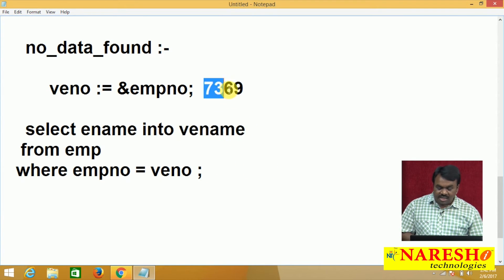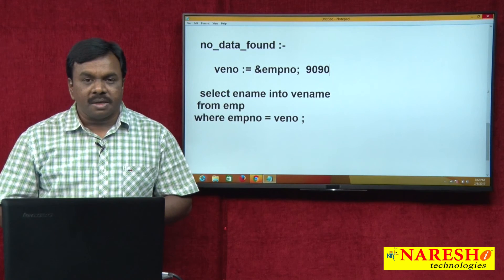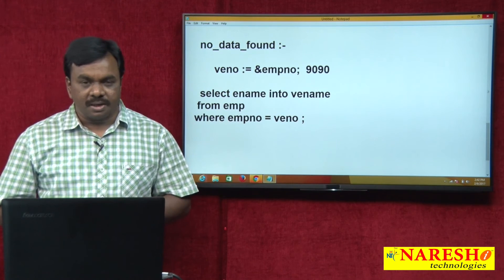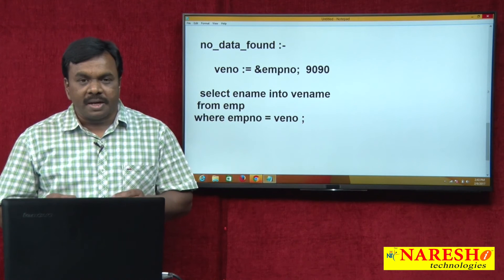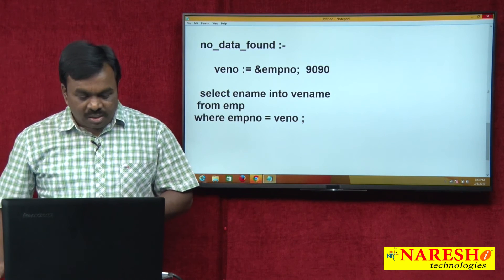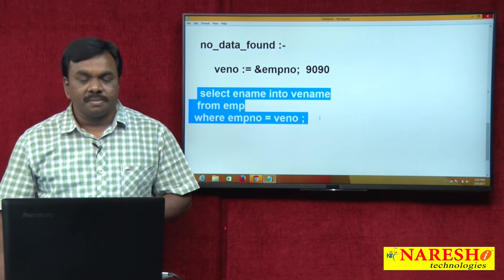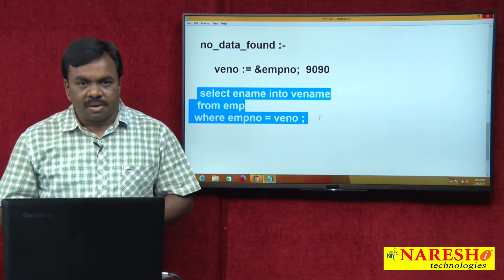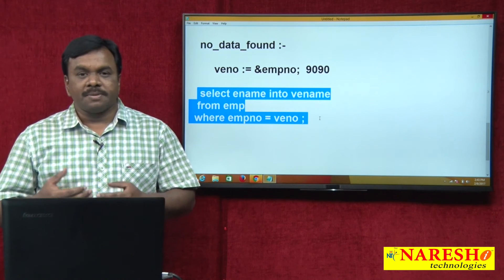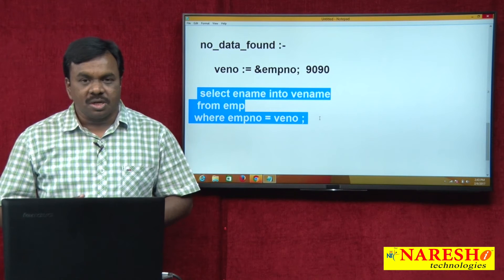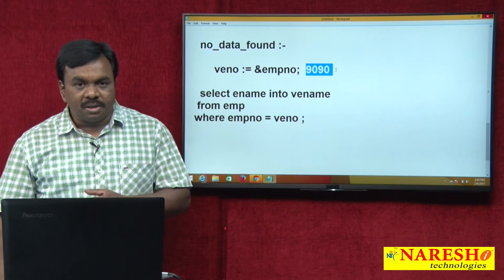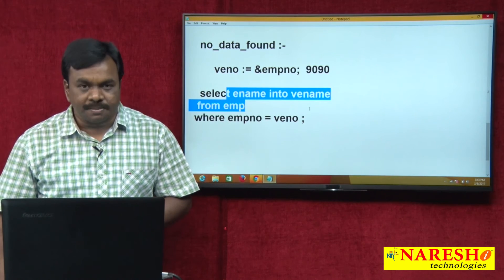For example, if the entered employee number is 9090 — if 9090 is there in the table? No, it is not there in the table. There is no employee with employee number equal to 9090. Then the select statement fails because the employee record is not there in the table. When the select statement fails, one exception rises: NO_DATA_FOUND. Because this employee number is not found in the table, the select statement raises NO_DATA_FOUND exception.